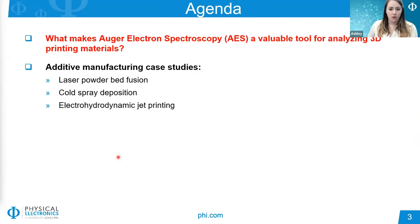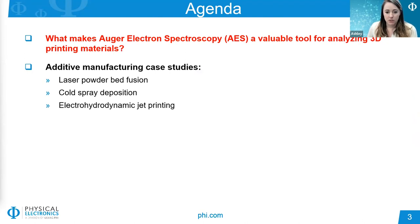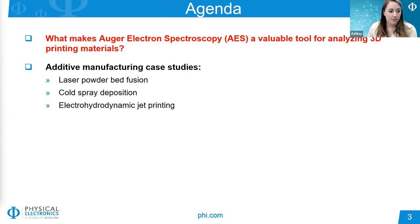Today I'd like to focus on how Auger electron spectroscopy serves as a valuable tool for analyzing materials used in additive manufacturing. Specifically, I'd like to talk about three case studies where Auger was used to improve the manufacturing process. First, we will discuss examples of laser powder bed fusion, and then I will move on to two other emerging techniques in the early stages of research: electro-hydrodynamic jet printing and cold spray deposition.